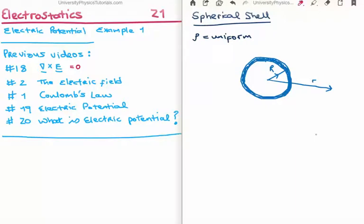In this video I'm going to continue on with my tutorials on electrostatics. This is video number 21, or it's video 3 in the subsection on electric potential. Specifically I'm going to do example 1 of 3, calculating the electric potential.